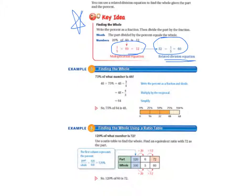And now let's look at example three, finding the whole. 75% of what number is 48? So 48 divided by 75% equals 48 divided by three-fourths. So we wrote the percent as a fraction and we divide it. So 48 times four-thirds, because we multiplied by the reciprocal, and then we simplify and we get 64. So 75% of 64 is 48.